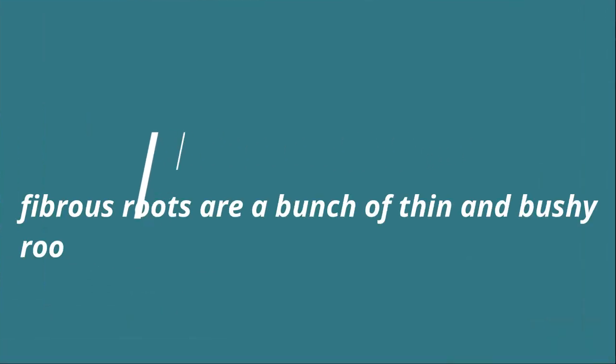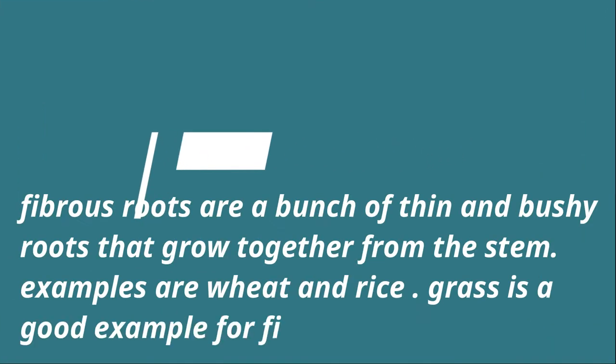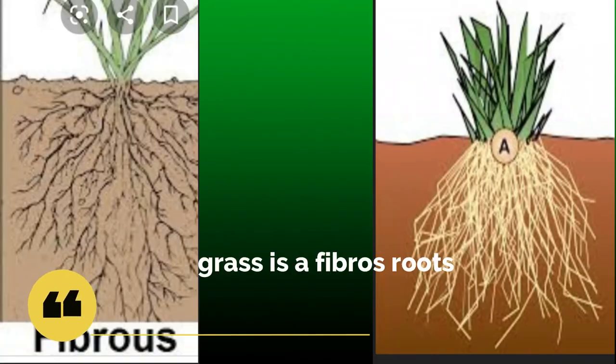Fibrous roots are a bunch of thin and bushy roots that grow together from the base of the stem. Wheat and rice are some examples of fibrous roots. Grass is also a very good example of fibrous roots.